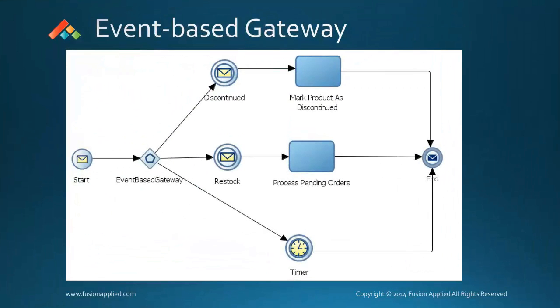Let's look at event-based gateways now. Event-based gateways are similar to exclusive gateways in that the process token will fork to one of several possible paths.